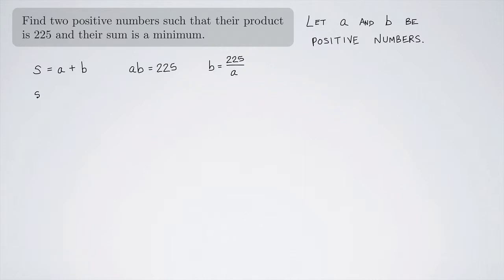Or I can rewrite this as B equals 225 divided by A. So now I can write the sum as A plus 225 divided by A. And now I have an expression for the thing that I want to minimize in terms of just one variable, A.